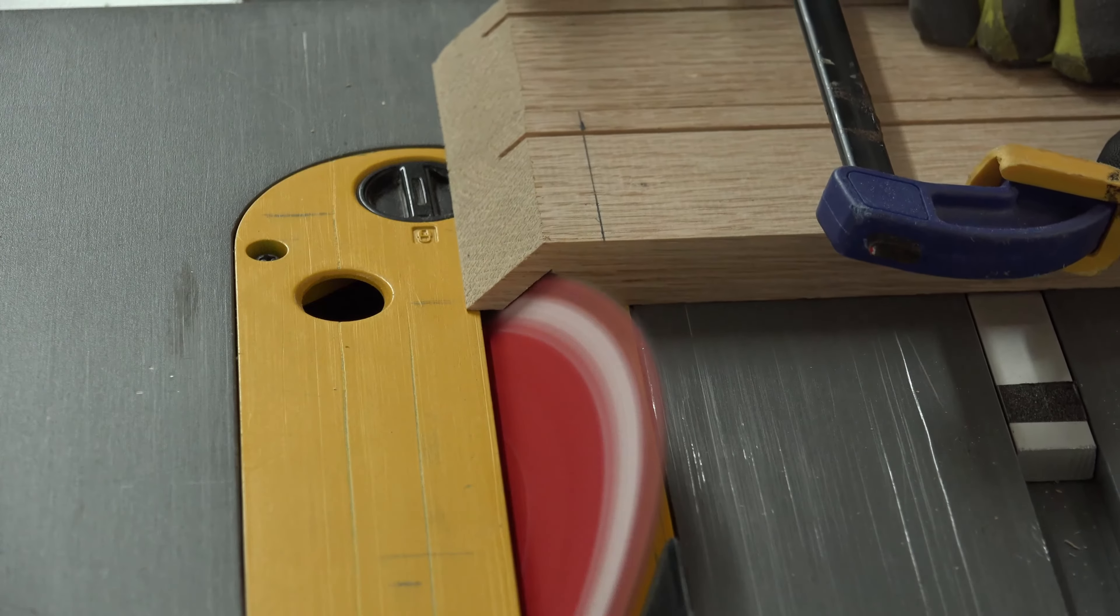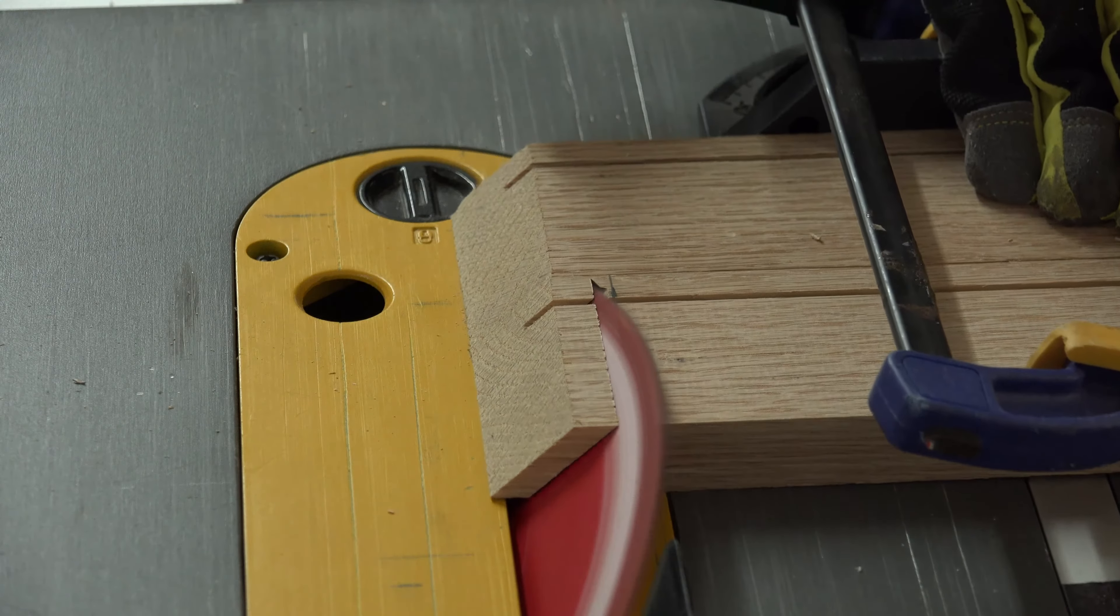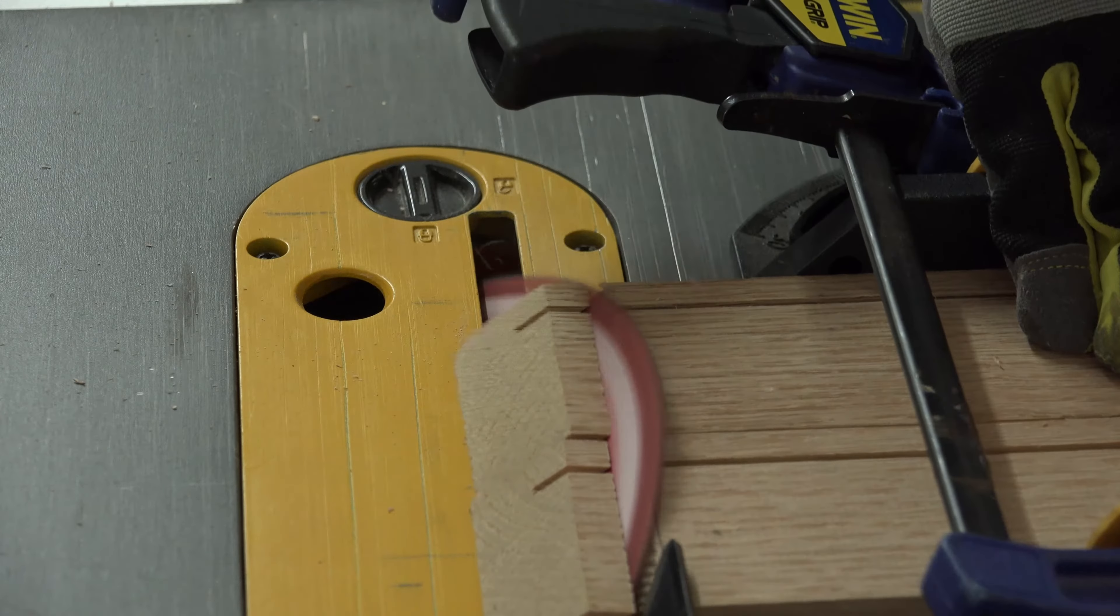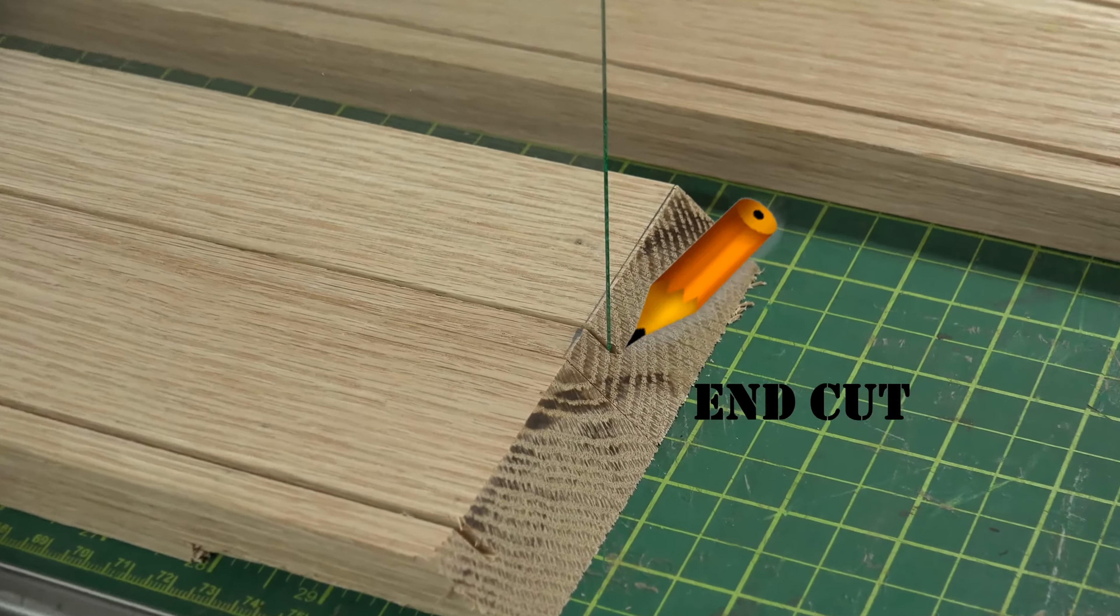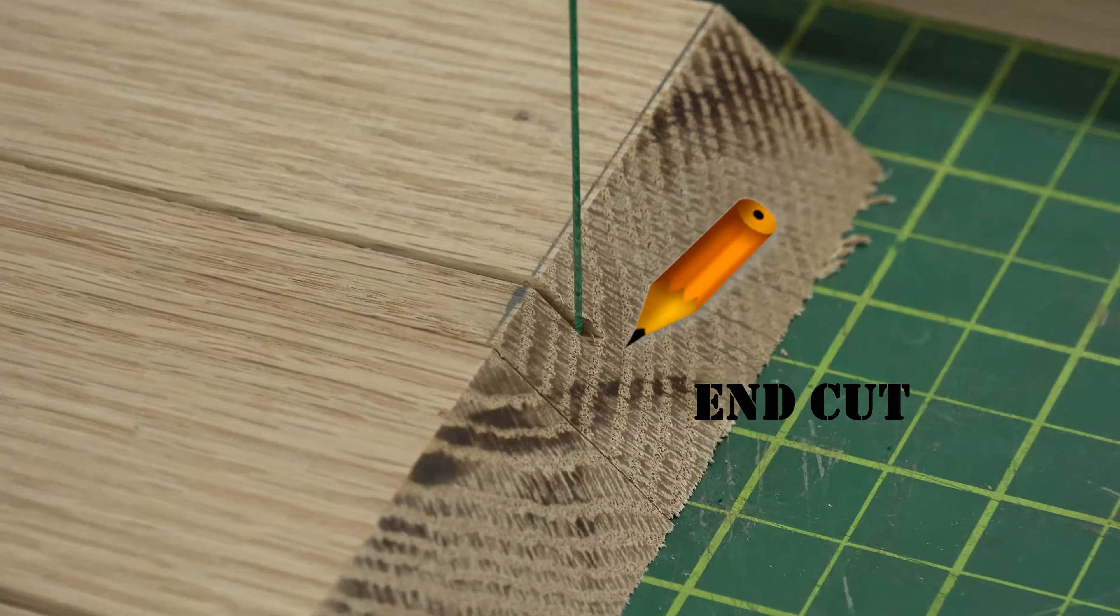Here I cut both top and bottom at the same time. I just clamped them together to make sure they remain square. Check your fit and make sure your glass does not extend beyond your end cut.